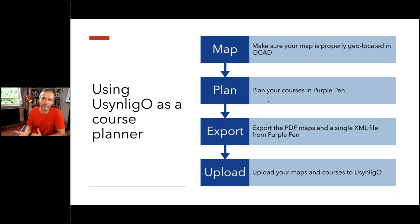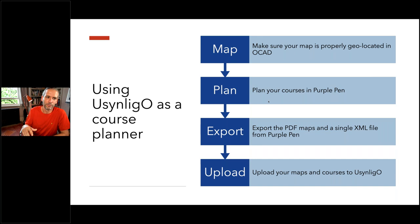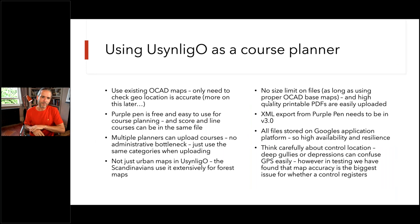Using it as a course planner — I'd done my first urban map over the Christmas period and had planned some courses with my son. We were ready to go with our first urban event, then lockdown happened. Usinglo worked well for me because I could take the map I'd created in OCAD — I knew it was properly geolocated, having mapped from OS data, Lidar, and Google overlays in OCAD 2020. I could take it straight into Purple Pen, plan a course, export PDF maps and a single XML file, fill in a simple form to upload to Usinglo, and we were running.